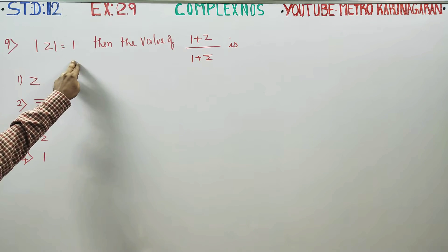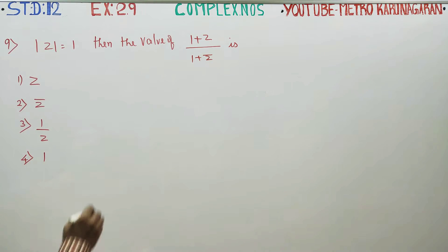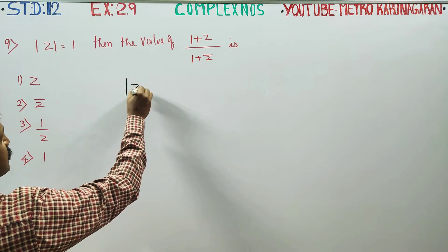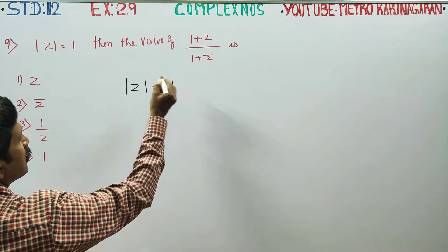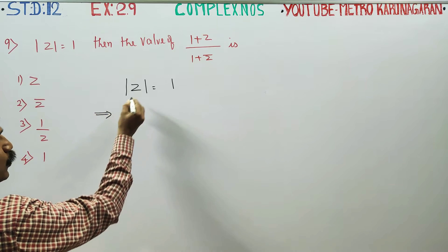It is given that modulus of z is equal to 1. You have to find the value of this. Modulus of z is equal to 1, there is a very important clue.